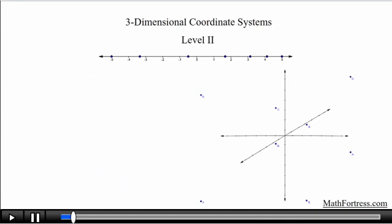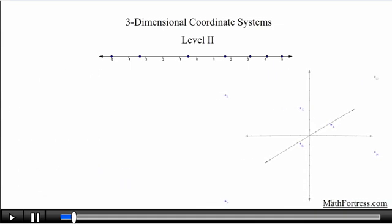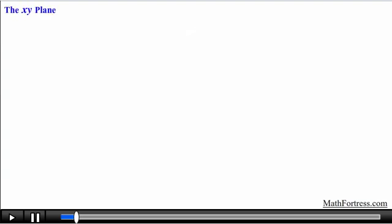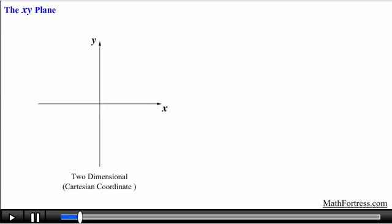Before we dive in with equations we need to be able to draw a 3-dimensional coordinate system and be able to identify and navigate through all its parts without getting lost. Let's first start with the traditional 2-dimensional Cartesian coordinate system. Recall that this coordinate system is formed by two axes, the x-axis and the y-axis, which are perpendicular to each other.